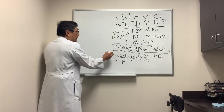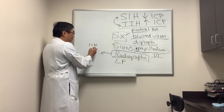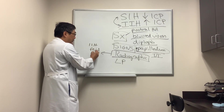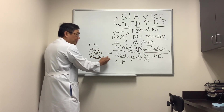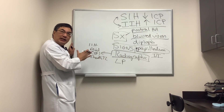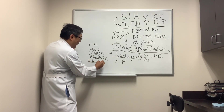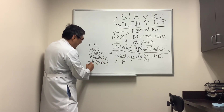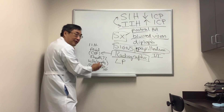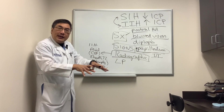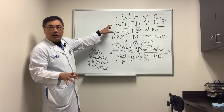On imaging, in high pressure IIH, we're going to see CSF fluid in the optic nerve sheath on T2, flattening of the globe because the fluid is pushing into the back of the eye, and an empty sella because the pressure is pounding down on the sella. An MR venogram, in addition to the MRI, must be performed to look for venous sinus stenosis and to rule out venous sinus thrombosis, which would of course make it no longer idiopathic.